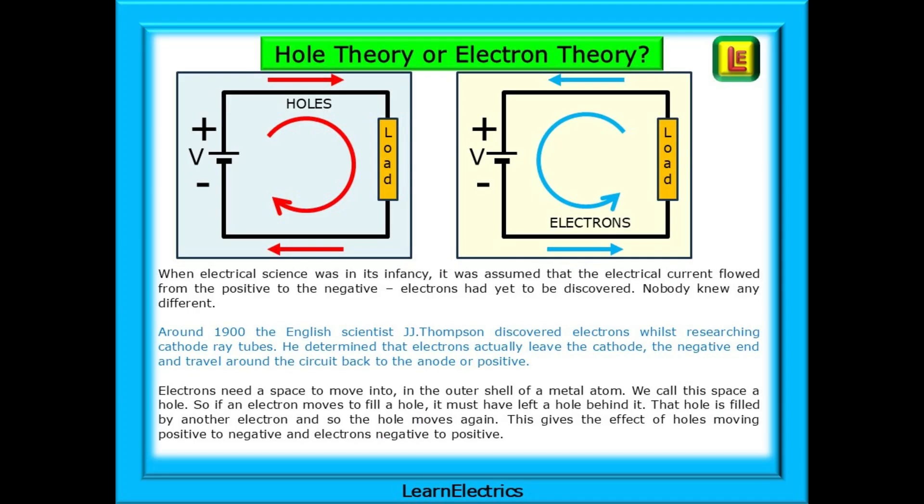When electrical science was in its infancy, it was assumed that the electrical current flowed from the positive to the negative. Electrons had yet to be discovered. Nobody knew any different and most of the world still thinks this way, positive to negative, especially when analyzing electronic circuit diagrams. Around 1900, the English scientist J.J. Thompson discovered electrons whilst researching cathode ray tubes. He determined that electrons actually leave the cathode, the negative, and travel around the circuit back to the anode or positive.